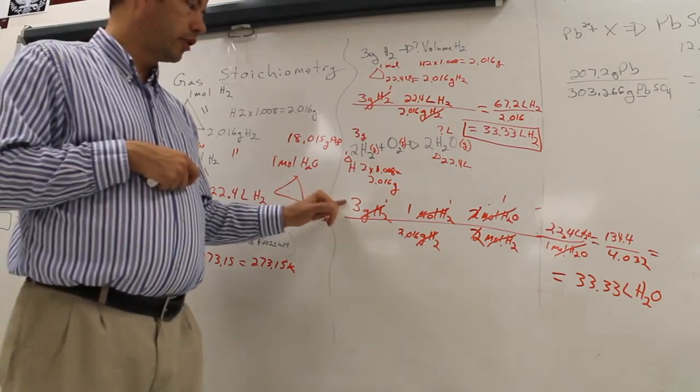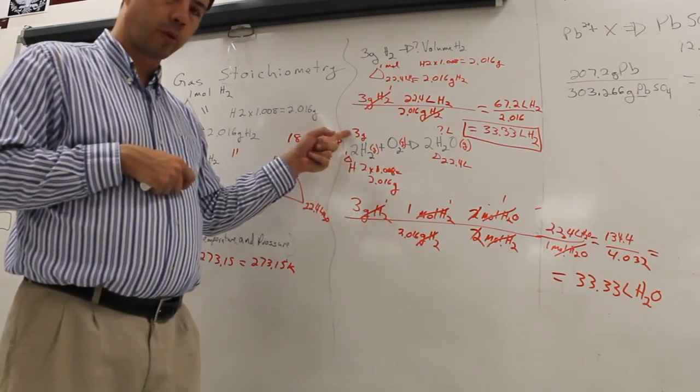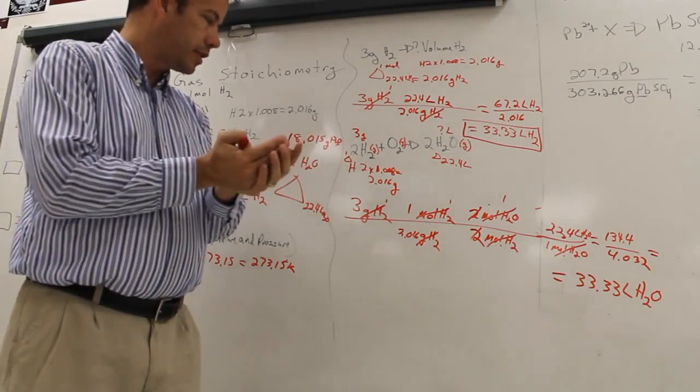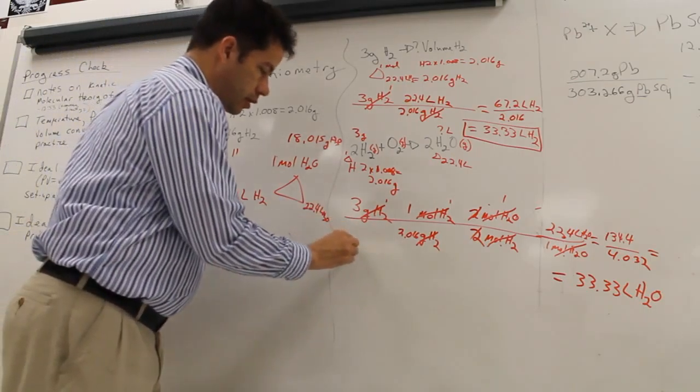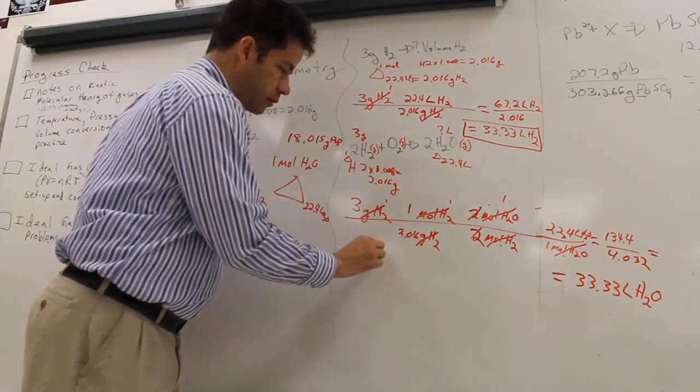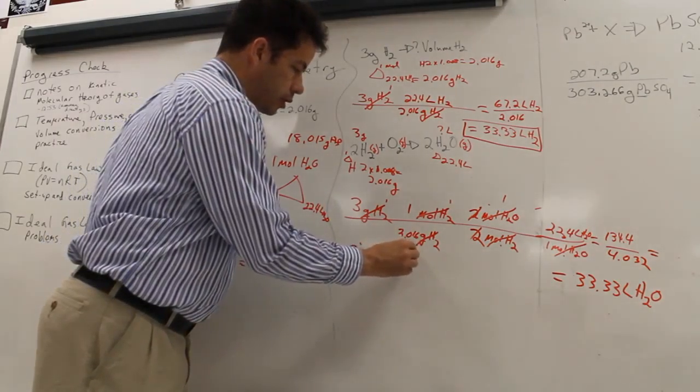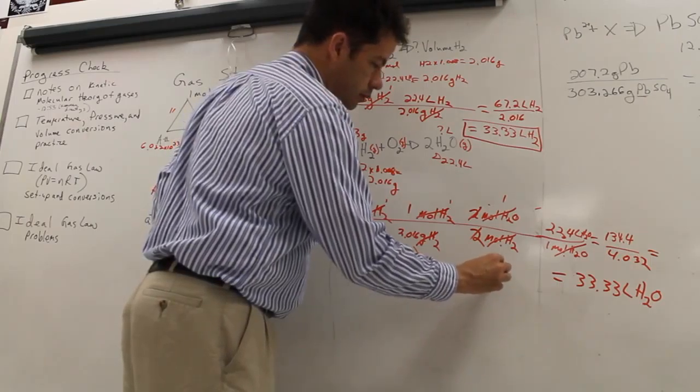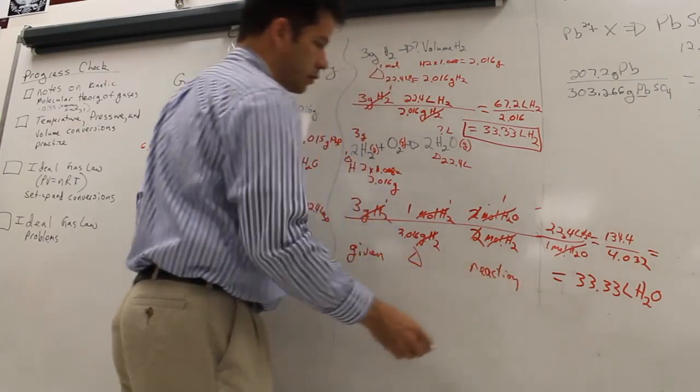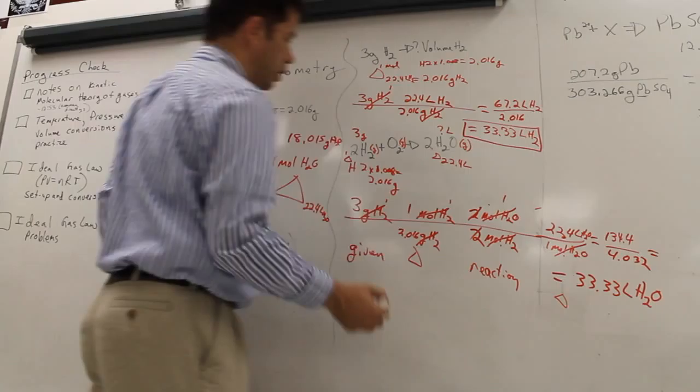And then we're going to plug it on the line. So, what did we start with? What were we given? What am I holding in the tank? 3 grams of H2. And then it's given, conversion factor from the triangle, reaction, triangle.